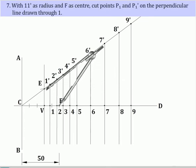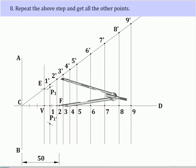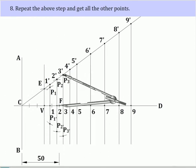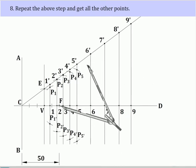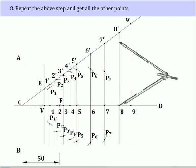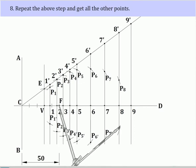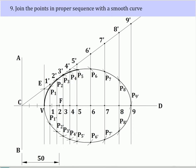Now, with 1, 1' as radius and F as center, cut points P1, P1' on the perpendicular line drawn through 1. Repeat the above step and get all the other points. Join the points in proper sequence with a smooth curve.